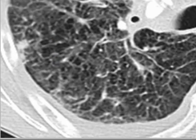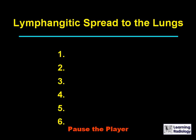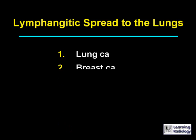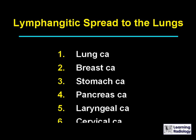This is the next differential: lymphangitic spread to the lungs. There are six causes: lung cancer, breast cancer, stomach carcinoma, pancreas carcinoma, laryngeal carcinoma, and cervical carcinoma.